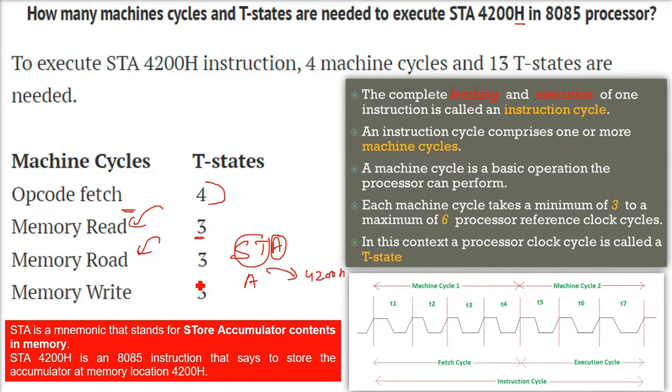When you take this machine cycle, how many machine cycles are there? There are four, you see on the left one. Four machine cycles are there. And if you add them 4, 3, 3, 3, that is going to be 13. These are 13 T-states. You can say in order to execute STA 4200 instruction, four machine cycles and 13 T-states has to be taken, has to be done. 4 plus 3 plus 3 plus 3 is basically 9 plus 4, that is 13 T-states.